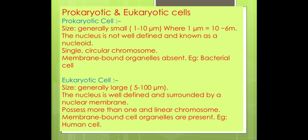The two types are prokaryotic and eukaryotic cells. Prokaryotic cells are generally small in size, ranging from 1 to 10 micrometers. The nucleus is not well defined and is known as a nucleoid. They have a single circular chromosome, and membrane-bound organelles are absent. Examples of prokaryotic cells are bacteria, which don't have a proper, well-defined nucleus — only a nucleoid form.